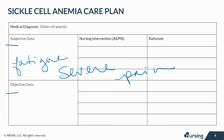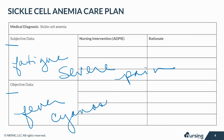Objective, or measurable, data includes swelling of the hands and feet, fever, jaundice, cyanosis, and the presence of sickled cells on a histologic exam.